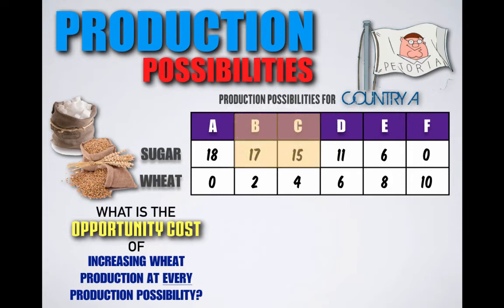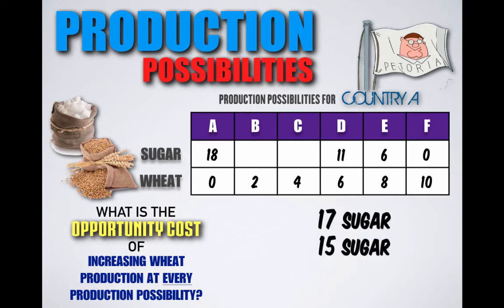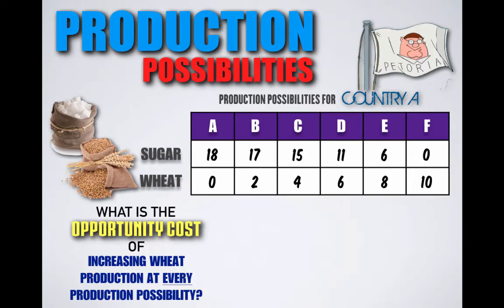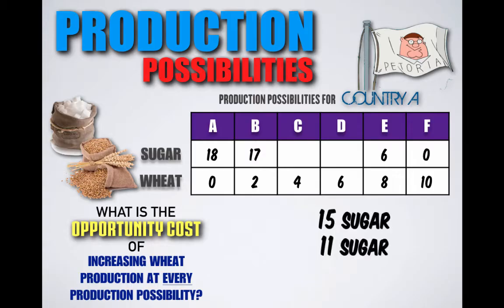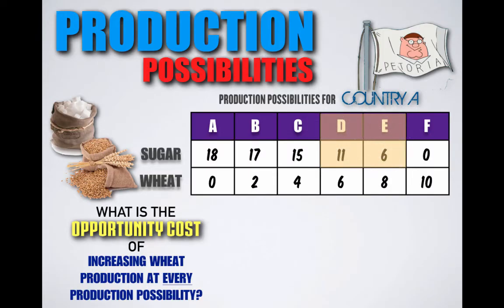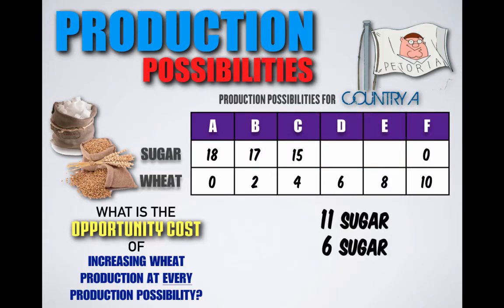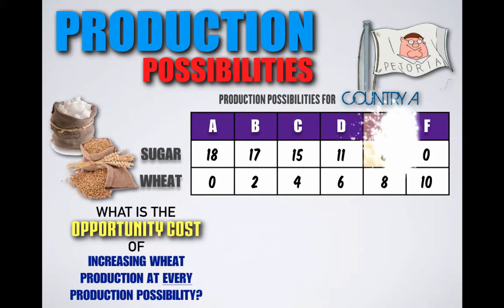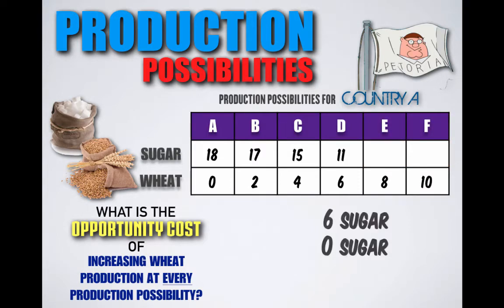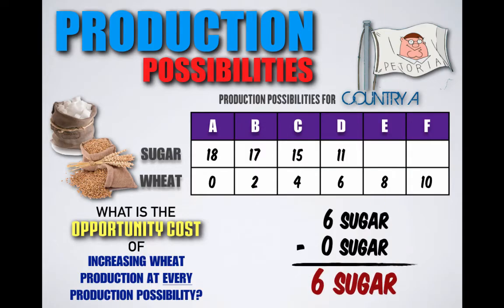If Petoria wanted to shift their production from combination B to combination C, they would decrease sugar production from 17 units to 15 units, so the opportunity cost would be two units of sugar. Shifting from C to D, sugar production decreases from 15 units to 11 units, meaning the opportunity cost would be four units of sugar. Changing from D to E, Petoria decreases sugar from 11 units to six units, and the opportunity cost would be five units of sugar. Finally, shifting from E to F, sugar decreases from six units to zero, meaning the opportunity cost would be six units of sugar.